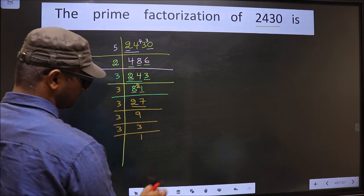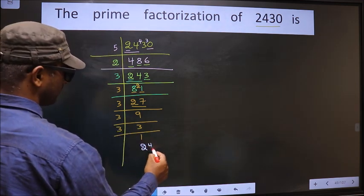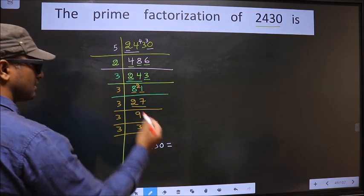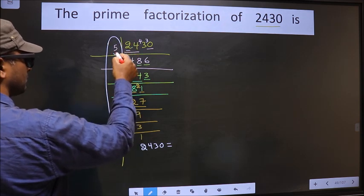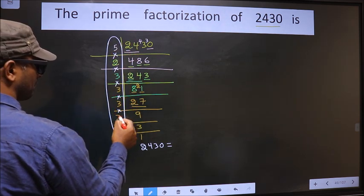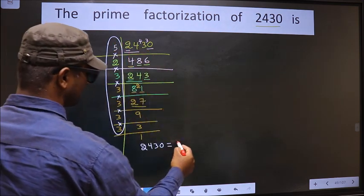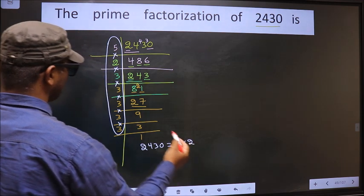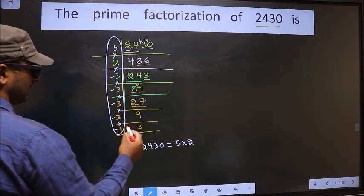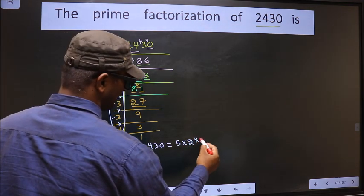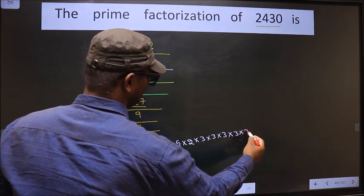We got 1 here. So the prime factorization of 2430 is the product of these numbers, that is 5 into 2. How many times do we have 3? 1, 2, 3, 4, 5. So into 3, into 3, into 3, into 3, into 3.